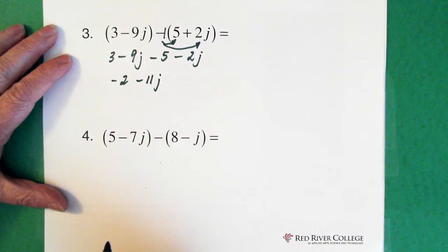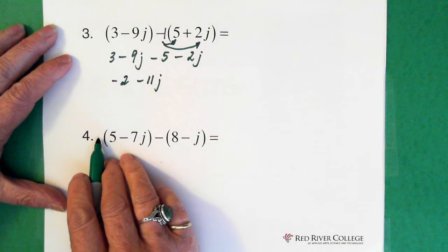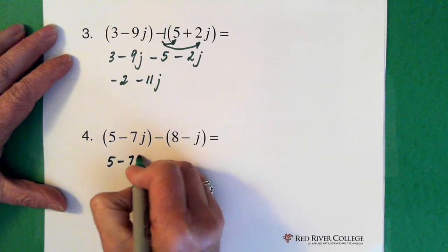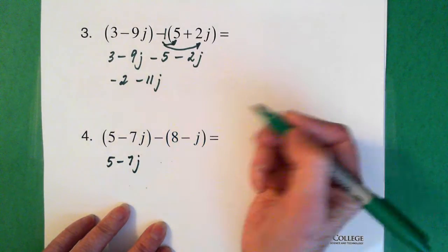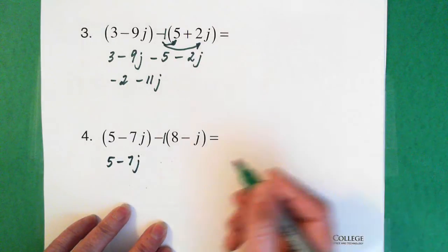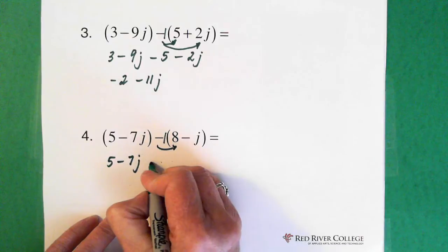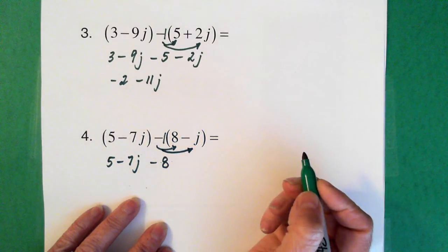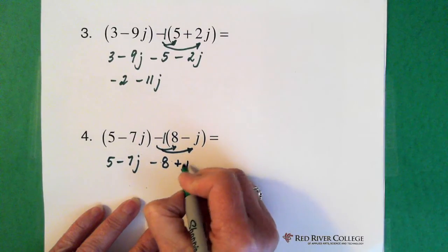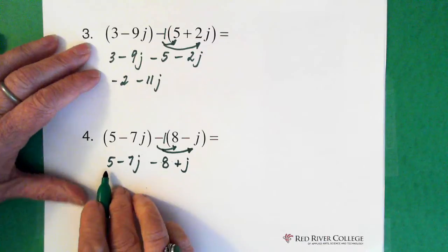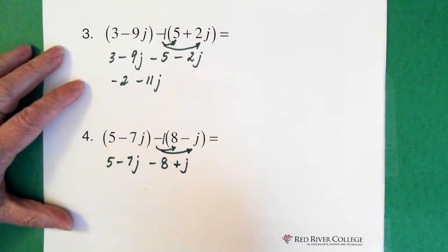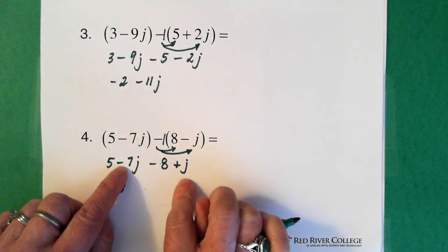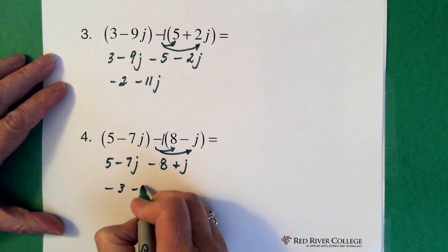Last question. We have a positive in front of the first bracket, so we can just drop it: 5 minus 7j. Here we have a minus in front, so it helps to put a minus 1 there. Minus 1 times 8 gives us minus 8, and minus 1 times minus j gives us plus j. Adding our real numbers: 5 minus 8 gives us minus 3. And minus 7j plus j gives us minus 6j.